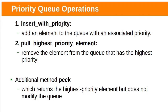Priority queue must support the following operations. First, insert with priority: add an element to the queue with an associated priority. Second, remove the highest priority element: remove the element from the queue that has the highest priority. In addition to these two mandatory operations, the peek method will also be frequently used. Peek returns the highest priority element but does not modify the queue, whereas remove finds the highest priority element and removes it. The peek operation always takes O(1) time.